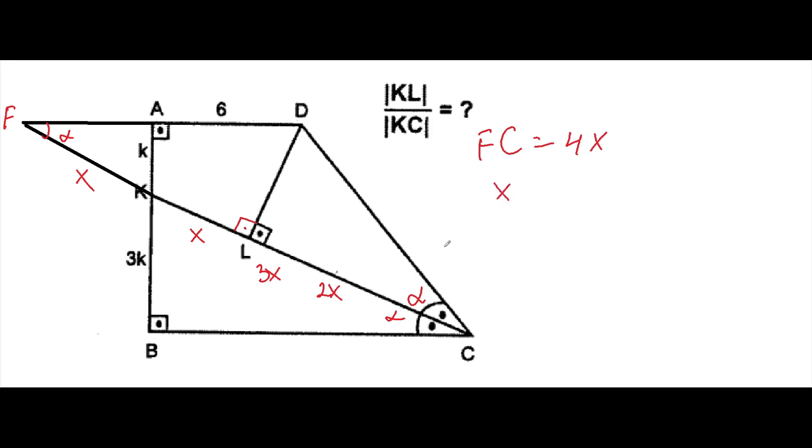And KC is equal to 3X. X over 3X will give us 1 over 3, which is the correct answer.